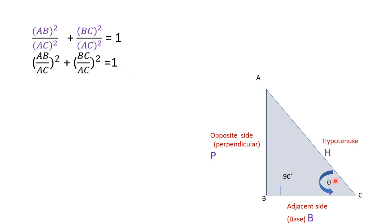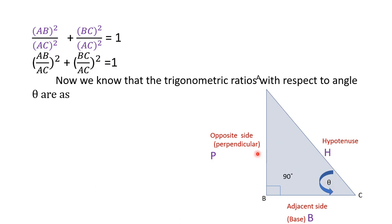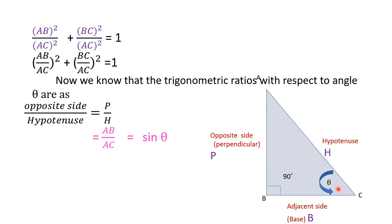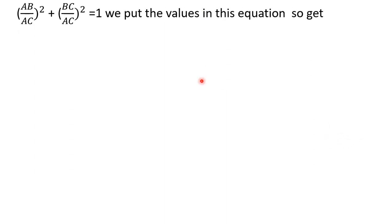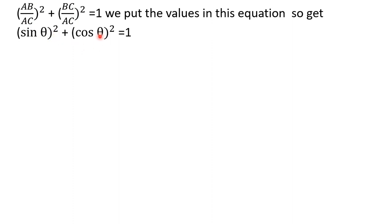Now applying trigonometric ratios for the acute angle theta: the ratio of opposite side to hypotenuse is AB/AC = sin θ, and the ratio of adjacent side to hypotenuse is BC/AC = cos θ. Substituting, we get sin²θ + cos²θ = 1. This is one of the most important trigonometric identities.